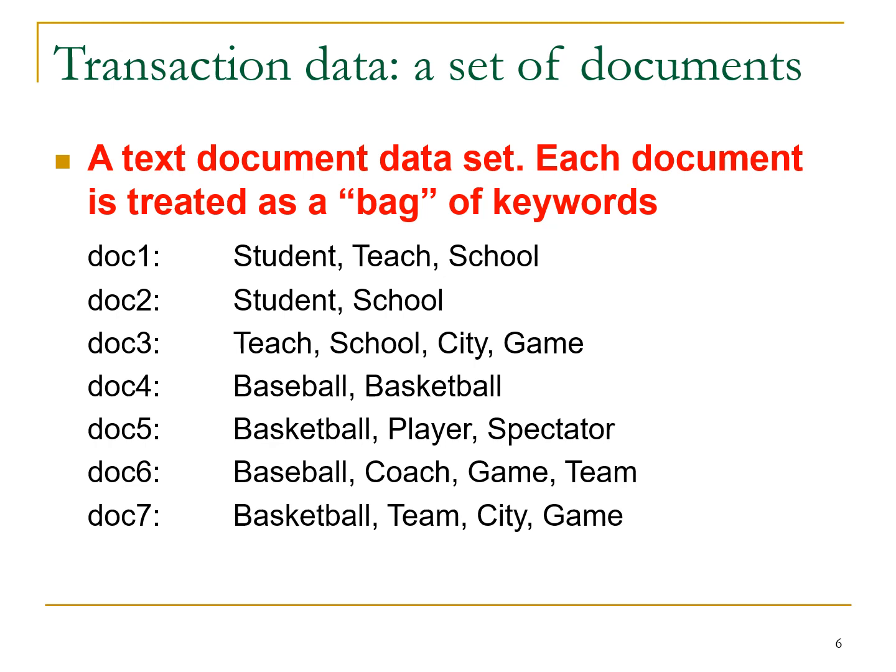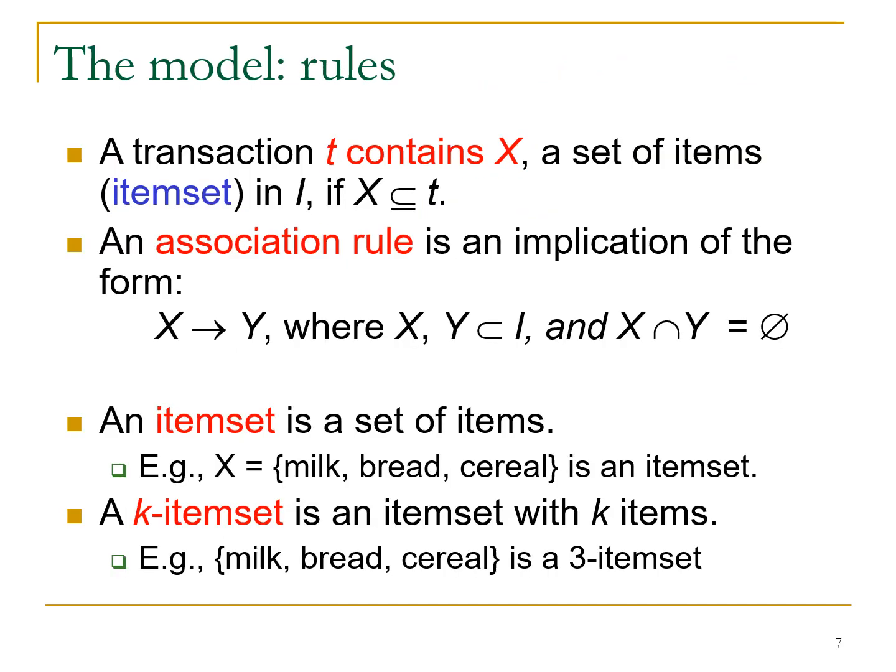A transaction T contains X, a set of items, as a subset of overall set I. An association rule is an implication of the form X → Y, where X and Y are subsets of I, and the intersection of X and Y must be null — meaning no overlapping elements. An item set is a set of items; for example, X = {milk, bread, cereal} is a 3-item set. If we add a fourth element like babies, it becomes a 4-item set. In general, a k-item set has k elements.